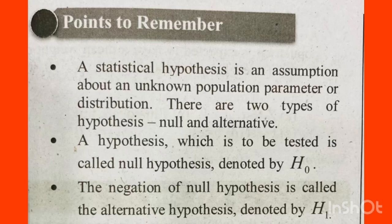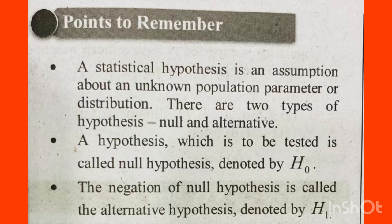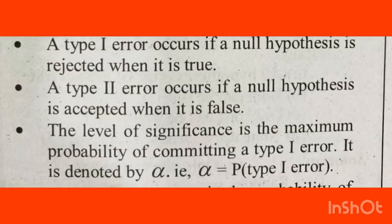These tentative assumptions are called Statistical Hypotheses. There are two hypotheses: Null Hypothesis and Alternative Hypothesis. The Null Hypothesis is a hypothesis which is to be tested — there are no significant differences between the population and the sample, denoted as H0. The negative or opposite hypothesis is the Alternative Hypothesis, denoted as H1.